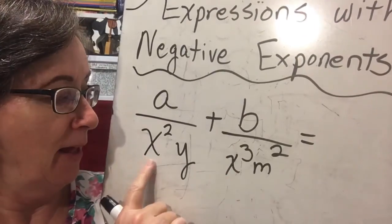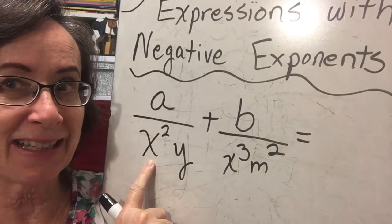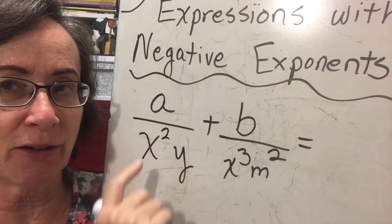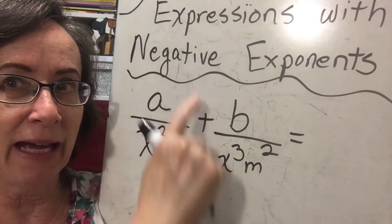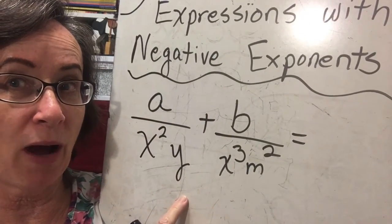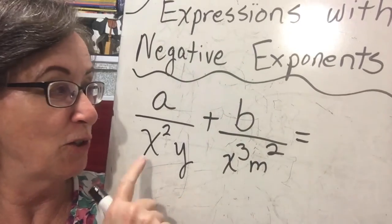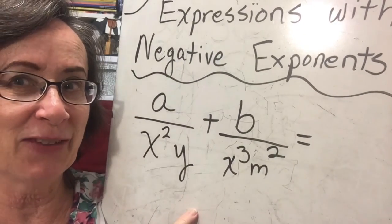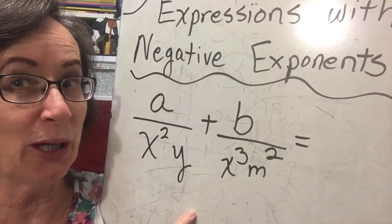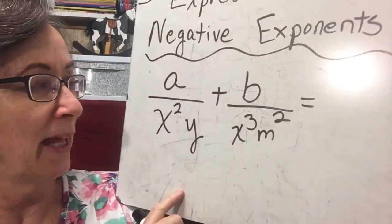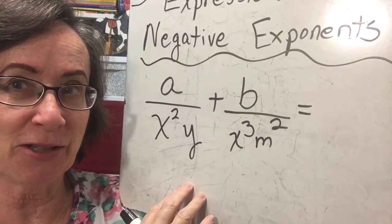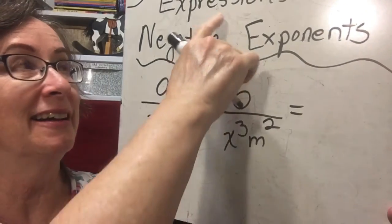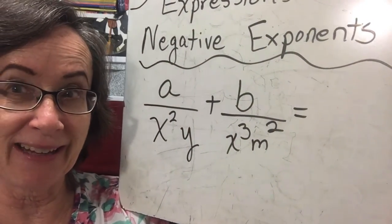Because wouldn't you agree that if I moved x squared to the numerator, wouldn't it be x to the negative 2? And if I moved y up to the numerator, wouldn't it be y to the negative 1? So these are negative exponents that have just been put into a positive exponent form. So when we see how to do these, then we'll know how to do the negative exponents we're talking about in this lesson.